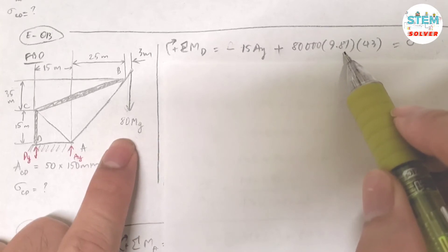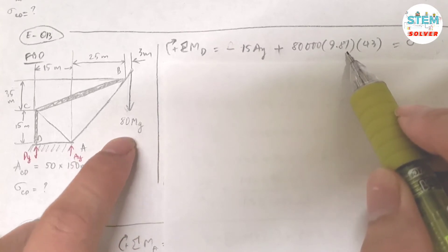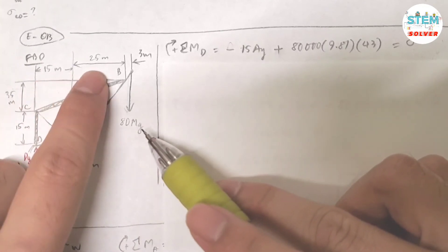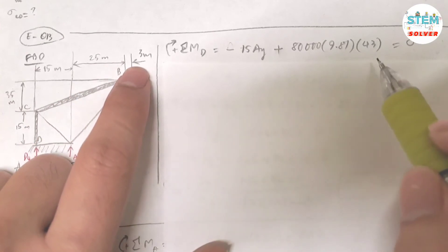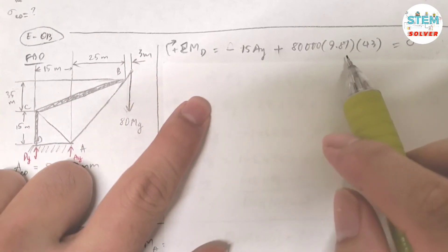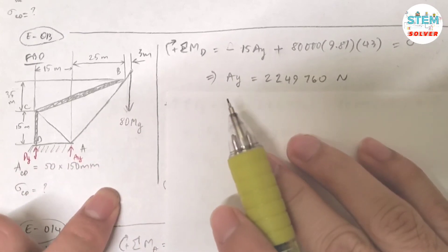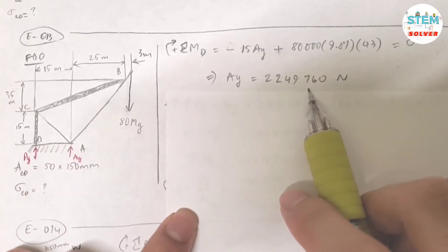And the distance. So the distance from D to here is 15 plus 25 plus 3, which is 43. And set this expression equals 0. So then solve for AY. I got AY equals this much.